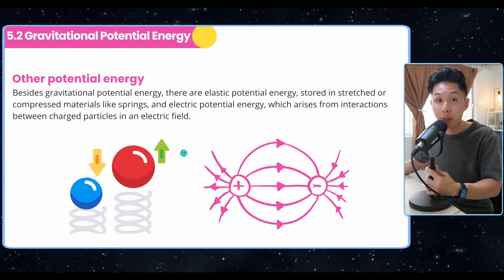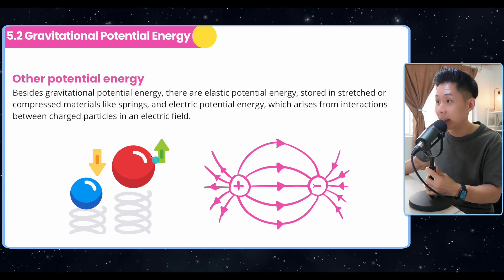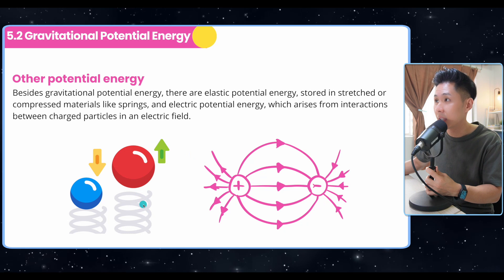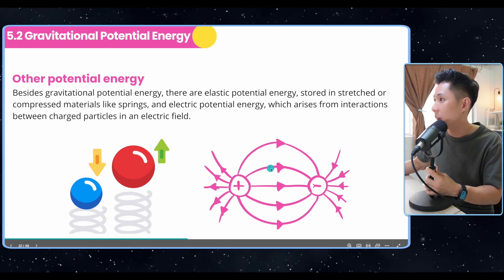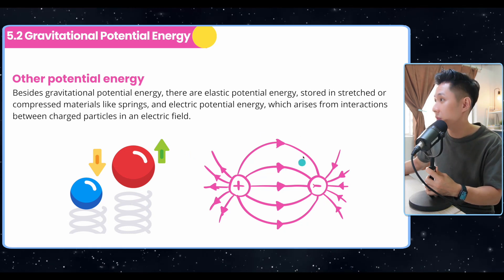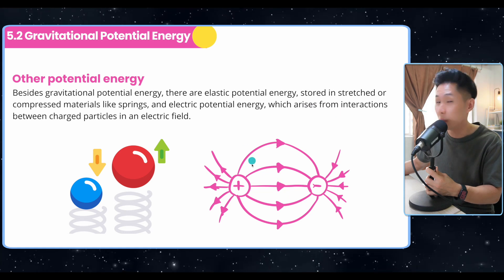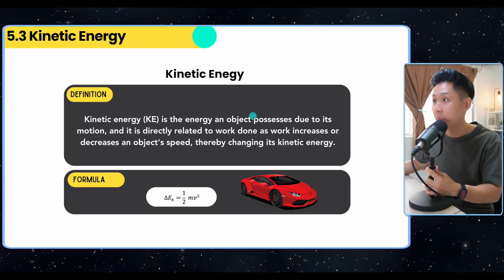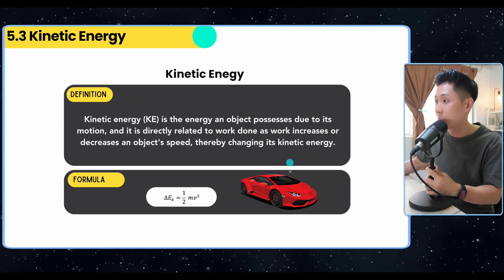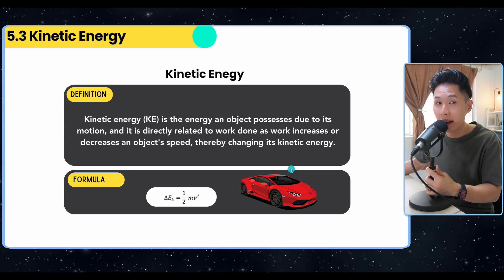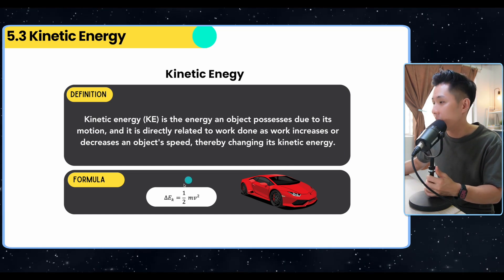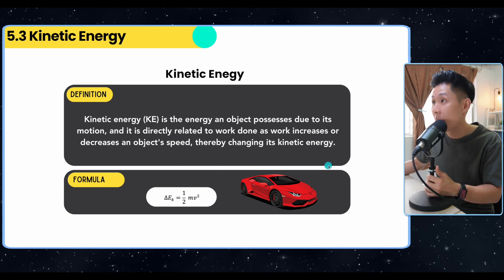So there are other forms of potential energy. We have elastic potential energy, which is energy that is stored inside a compressed material. We also have electric potential energy, which arises from interaction between charged particles in an electric field. Now let's move into kinetic energy. Kinetic energy is the energy an object possesses when they are moving. The faster they move, the more energy they have. The heavier they are, the more energy they have. So that's when we have the formula half mv squared.